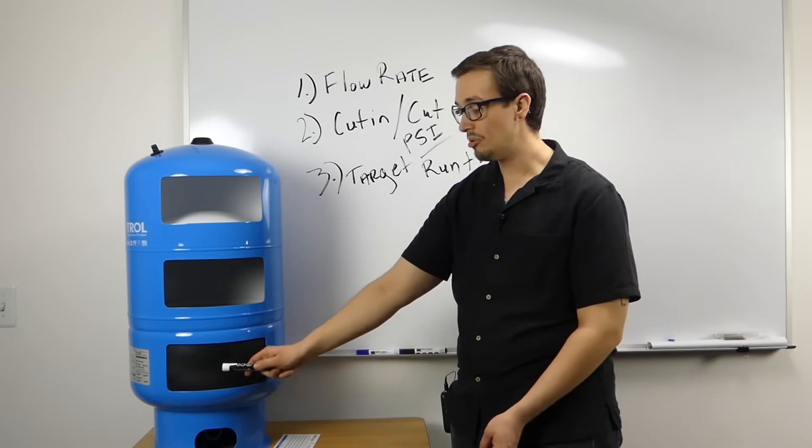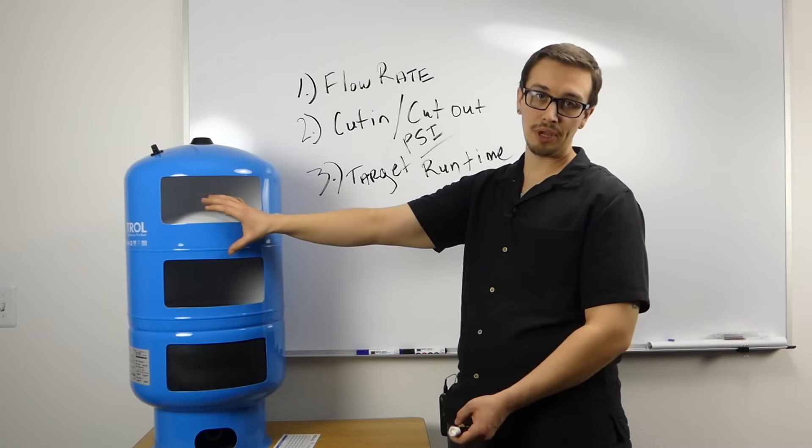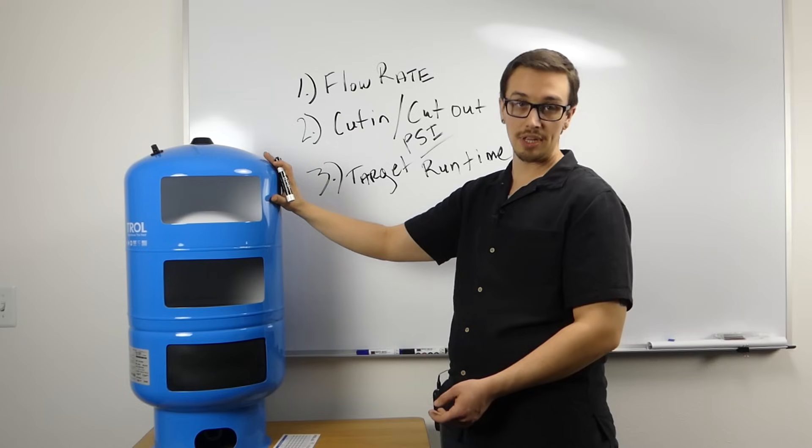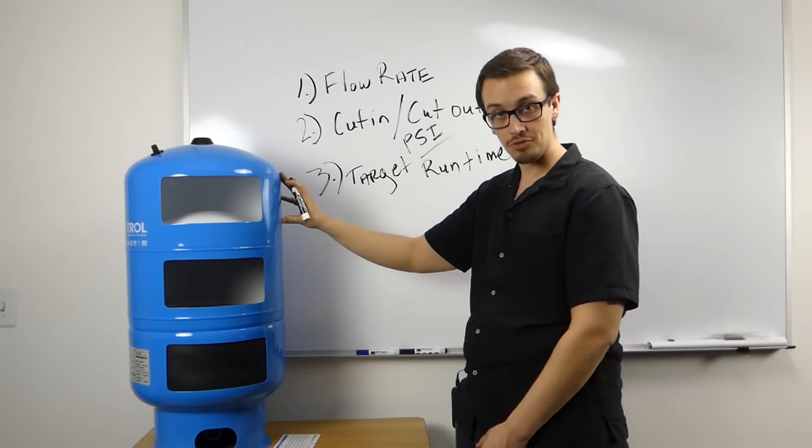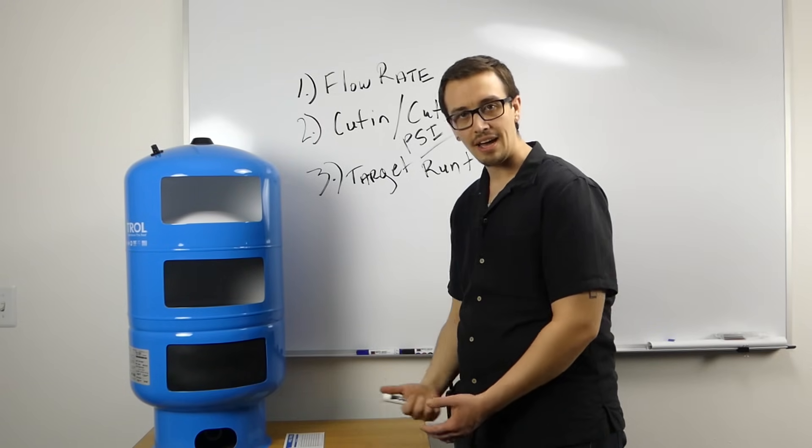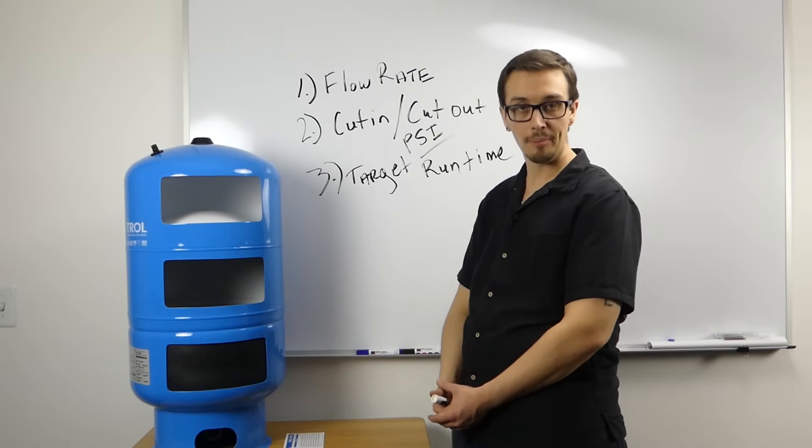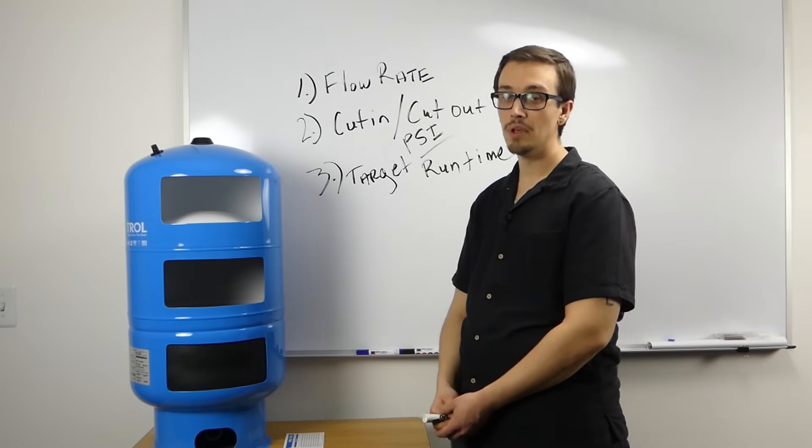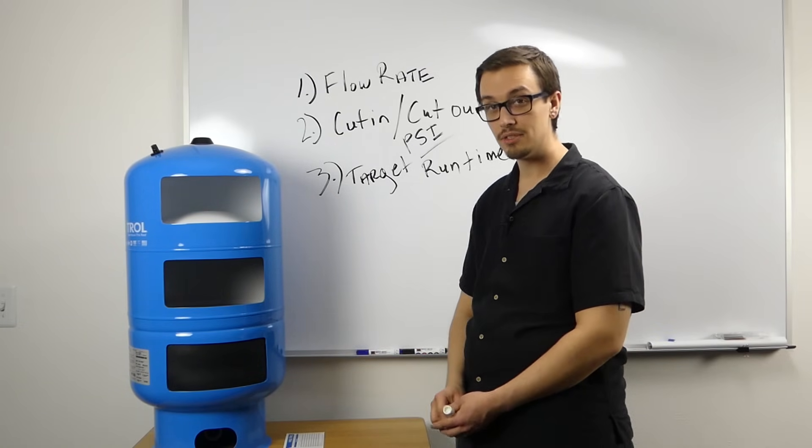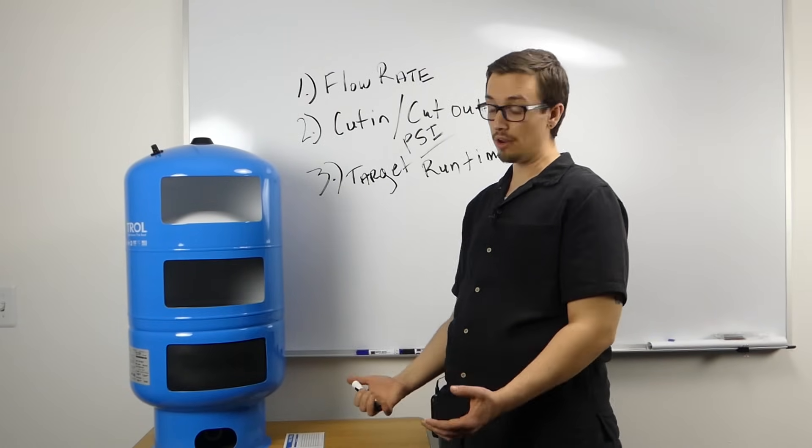You have a bladder in the tank that can only expand so far, and then the rest of the space in the tank is air. In the instance of this 20-gallon tank, you only have a drawdown capacity of about four and a half to six and a half gallons depending on the operating pressure of the system. So a 20-gallon tank only has between four and a half to six and a half gallons, which gives you an idea of the type of cycle time you're going to be looking at.